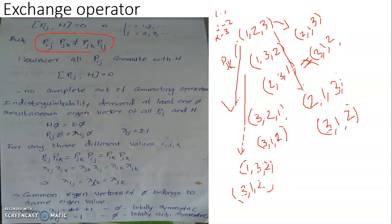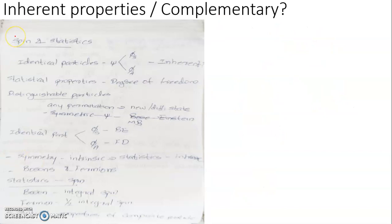It must be an inherent property, as in the case of spin or statistics. We came to the conclusion that the symmetry nature of the wave function used to represent a particle must be an inherent property associated with the particle, like spin and statistics.